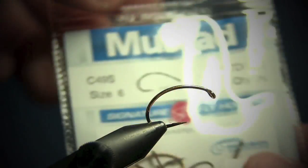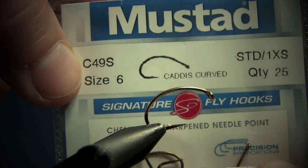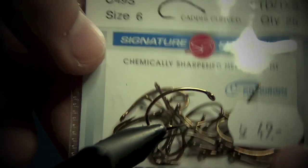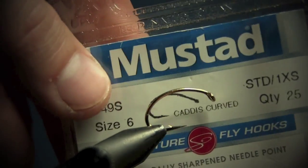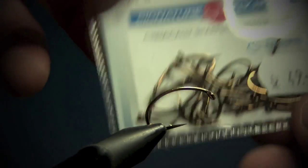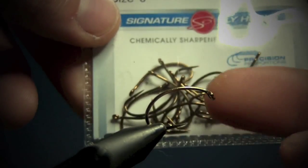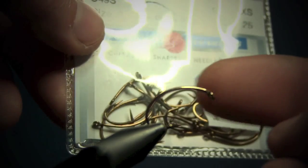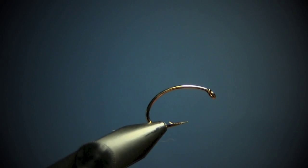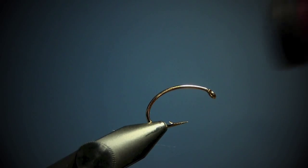This is a nice hook. You can also use this from Mustad C49S size 6. It's a little bit different, not the same shape, but I've used this for many years and it hooks very nice. I'm going to tie it on this hook now.